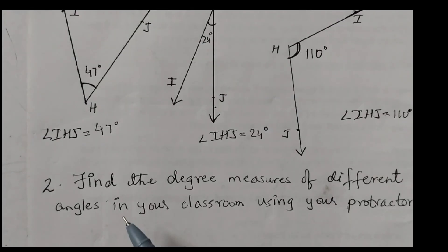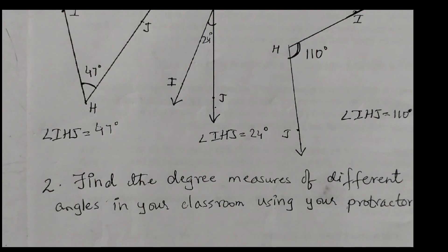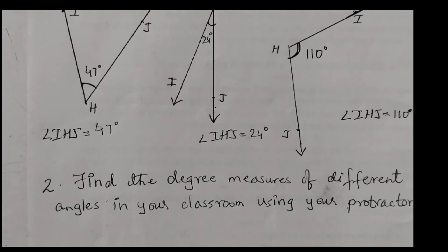Moving on to question number two: find the degree measures of different angles in your classroom using your protractor. You can use your protractor to measure different things — your notebook, textbook, desk, pencil box, different charts. This is an activity to understand the different types of angles: acute, right, obtuse, straight angles, and other types. Just explore it.